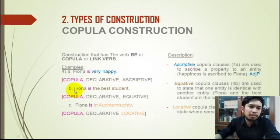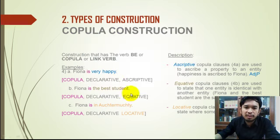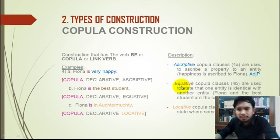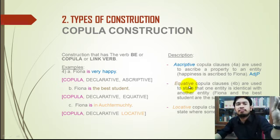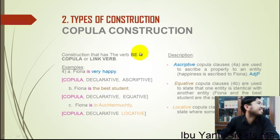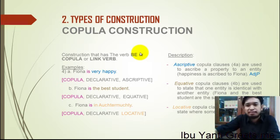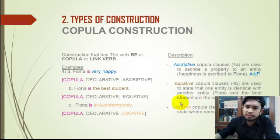The second example is 'Fiona is the best student.' 'Fiona' is the subject, 'is' is the 'be' construction — copula, declarative, and equative. It is equative because it is followed by a noun phrase: 'the best student.' Just remember: equative means it is followed by a noun phrase.